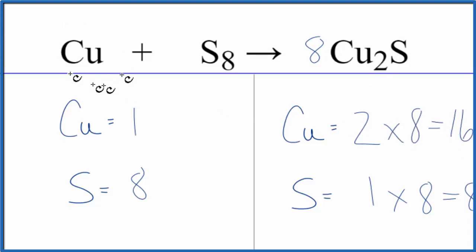But that's okay. Copper is by itself, so if we just put a coefficient of 16, 1 times 16, that would give us 16, and we'd be done.